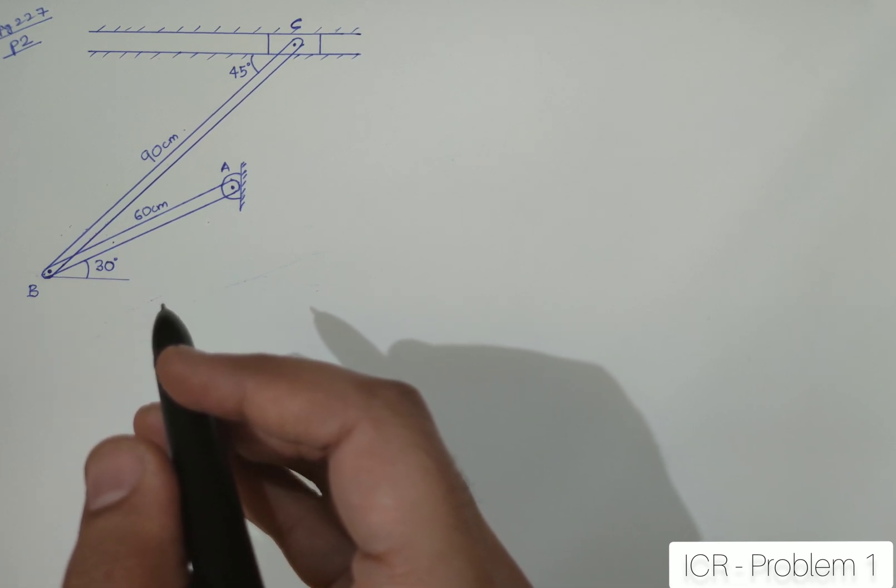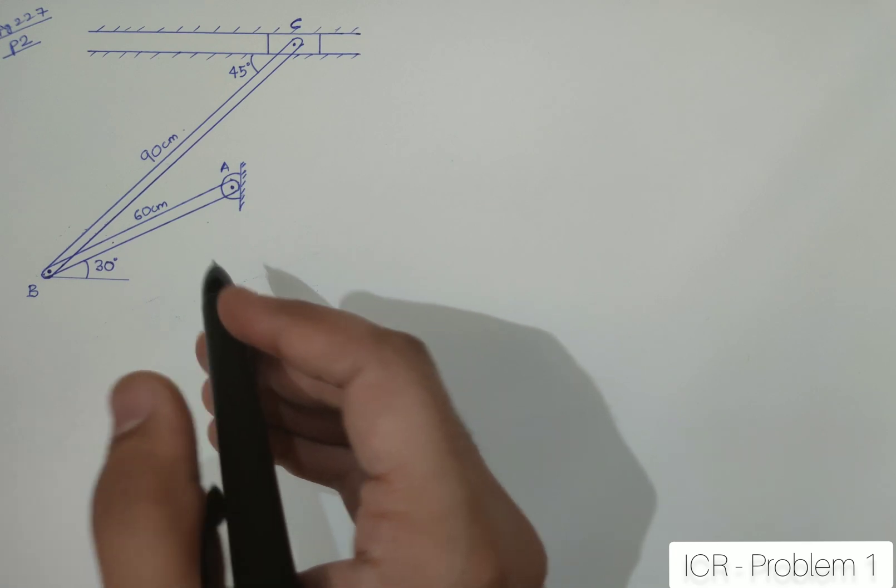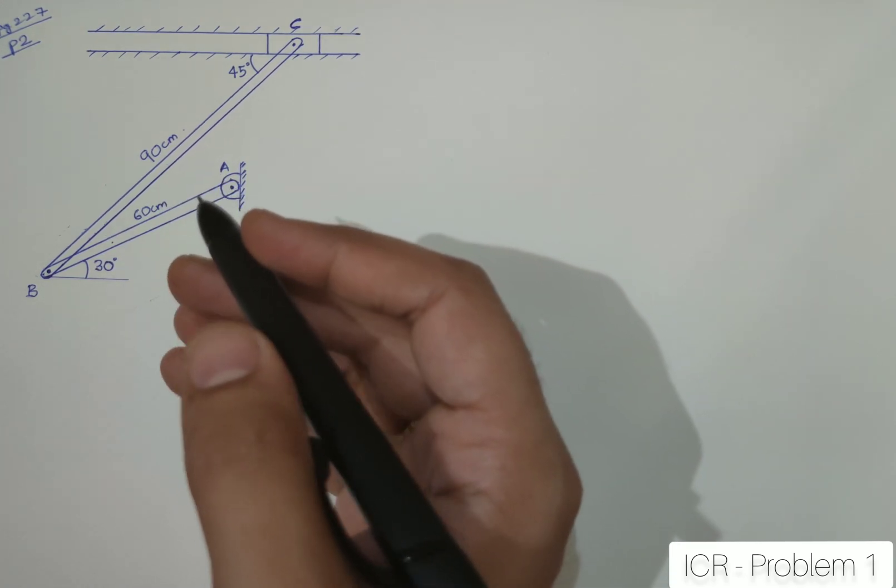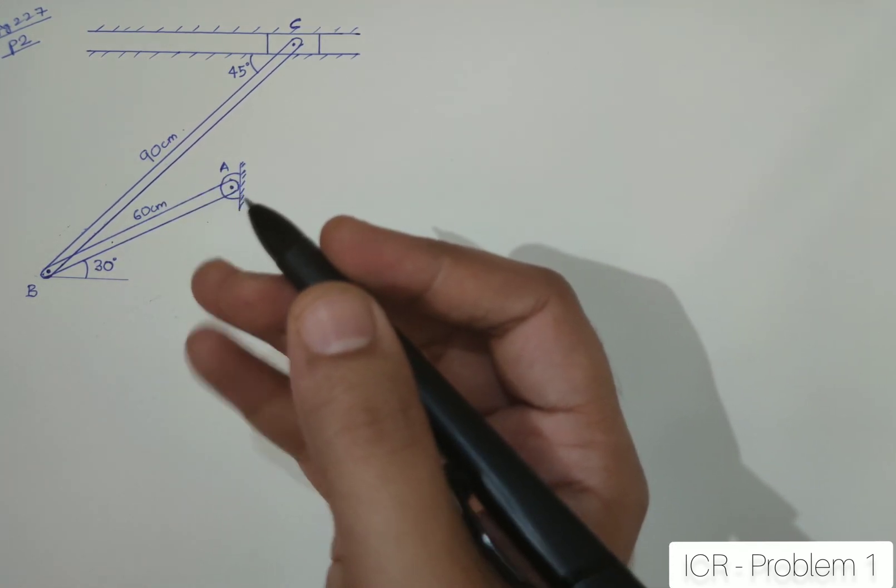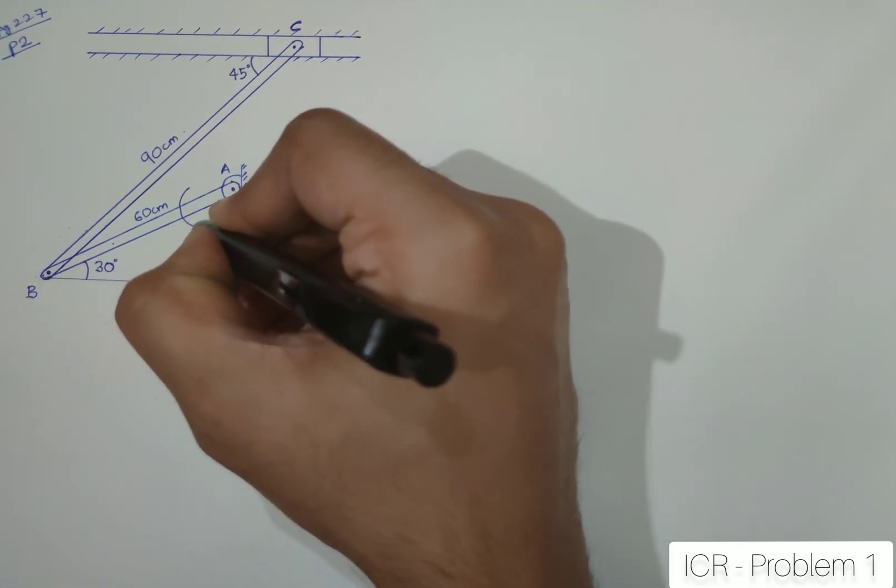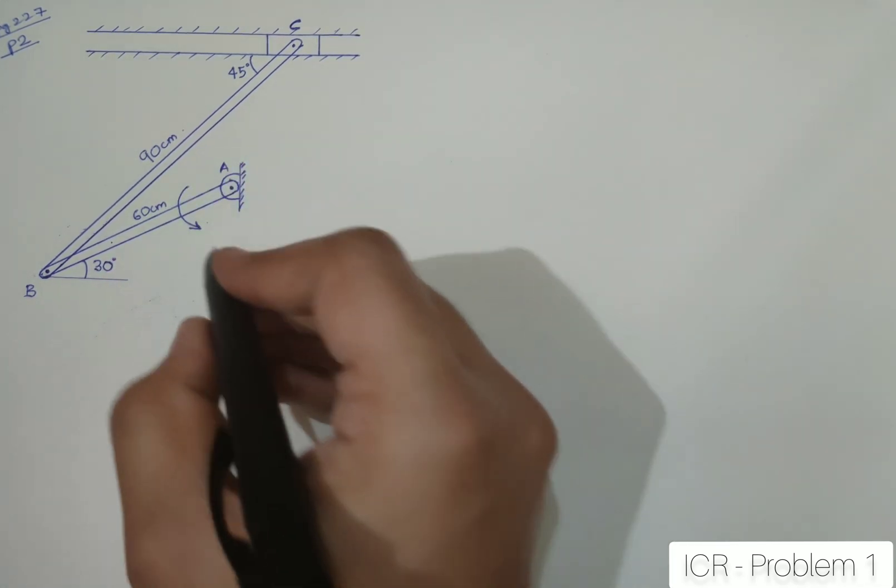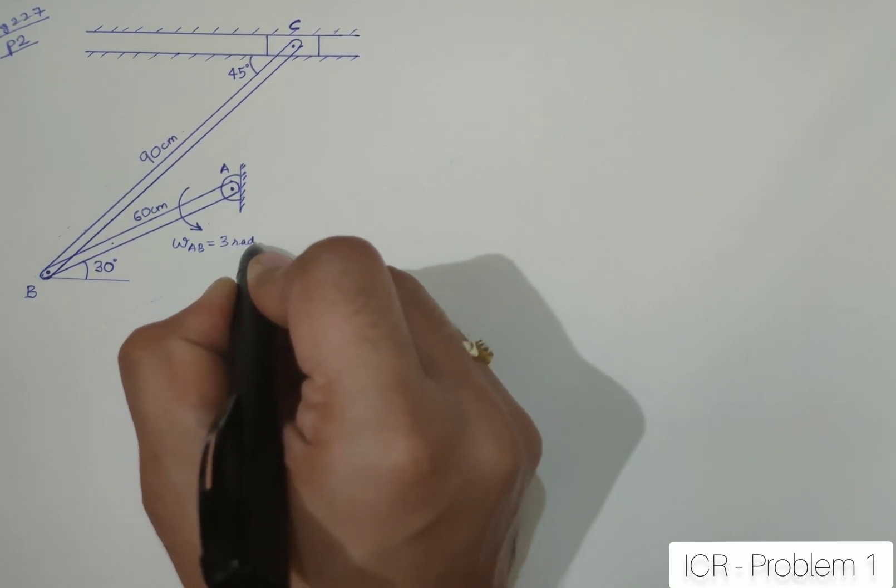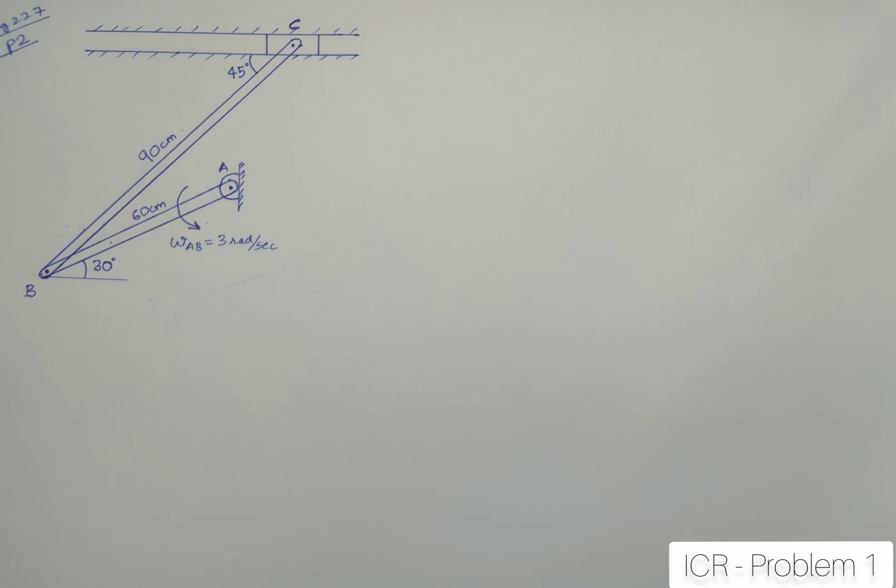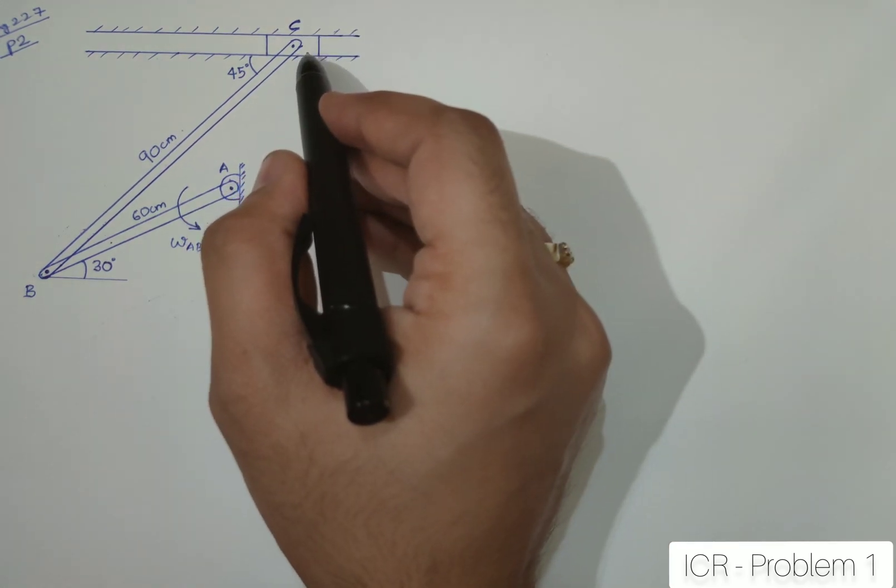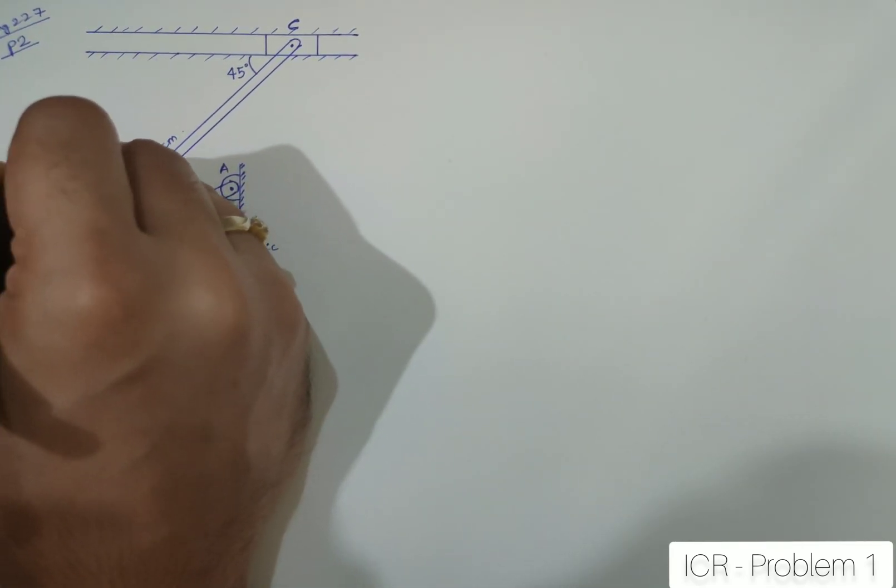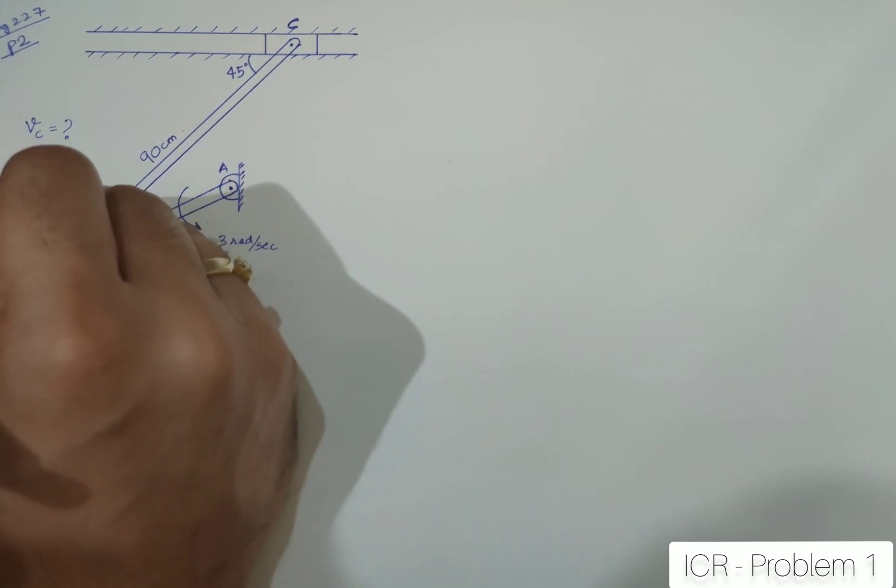It says that the angular velocity of link AB is 3 radians per second. They have not specified the direction of this angular velocity of this rod. So we can simply assume a particular value and add the direction. I will consider it to be moving anticlockwise. So omega AB is given as 3 radians per second. We are supposed to determine the velocity of the block C and the angular velocity of the connecting link BC. They want us to find out VC and omega BC.